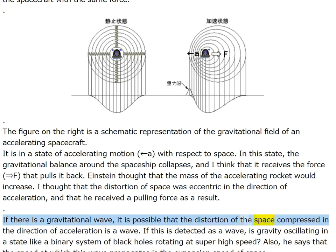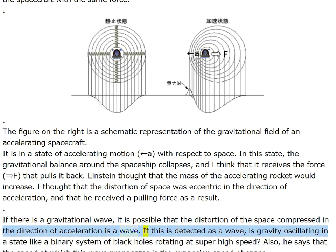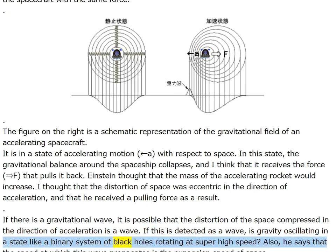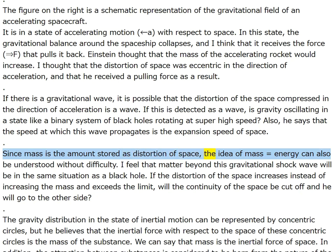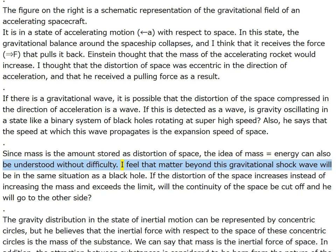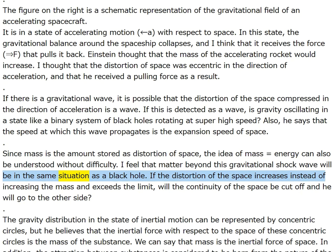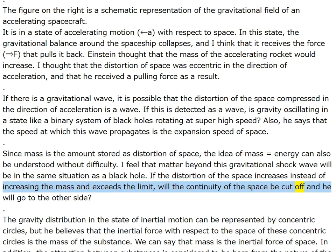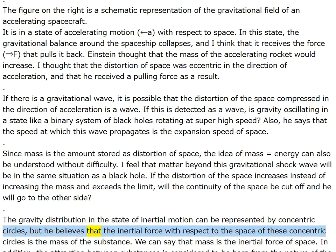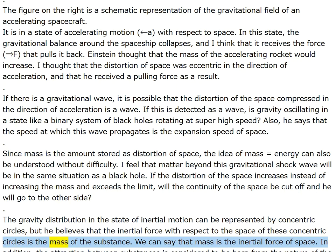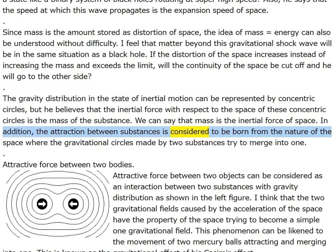The speed at which this wave propagates is the expansion speed of space. Since mass is the amount stored as distortion of space, mass equals energy can be understood without difficulty. Matter beyond this gravitational shock wave may be in the same situation as a black hole — if the distortion of space increases and exceeds the limit, the continuity of space may be cut off. The gravity distribution in inertial motion can be represented by concentric circles; the inertial force with respect to the space of these concentric circles is the mass of the substance — mass is the inertial force of space.